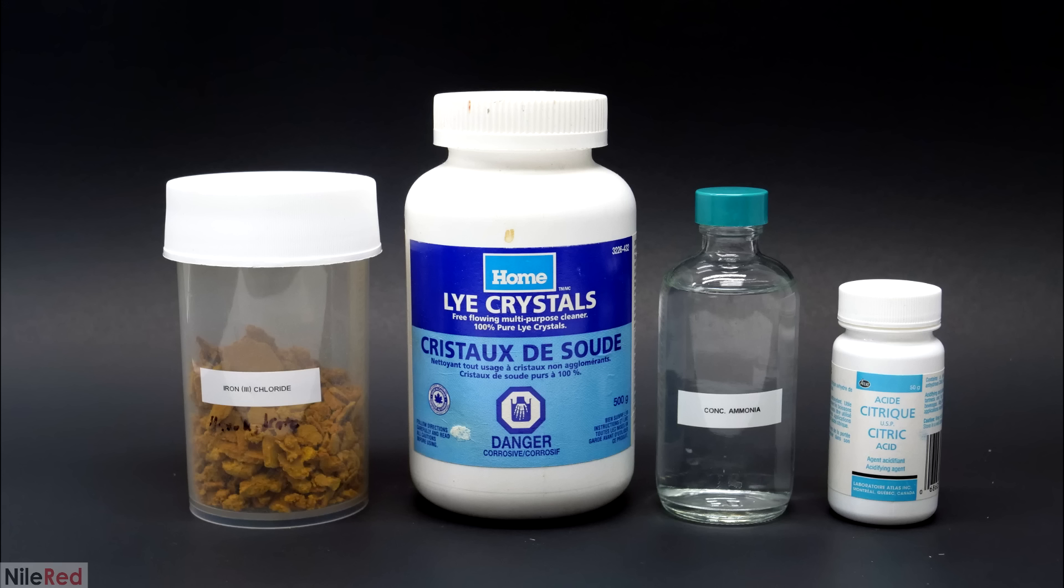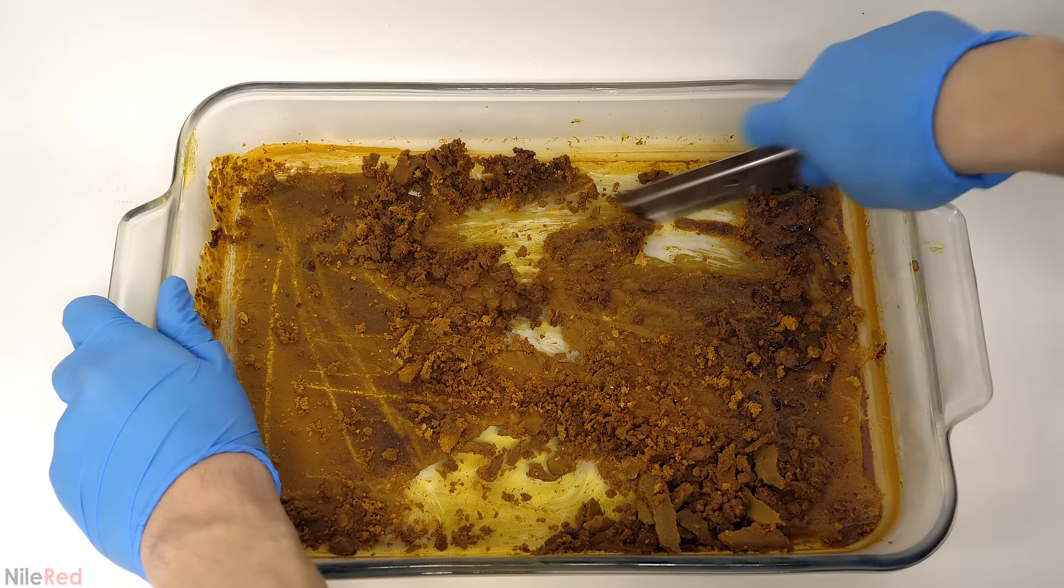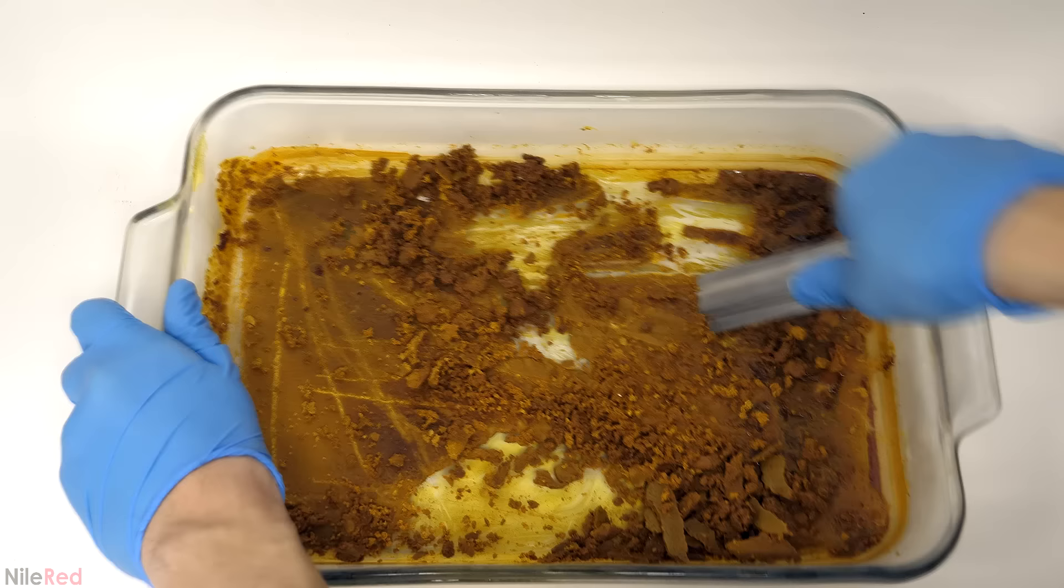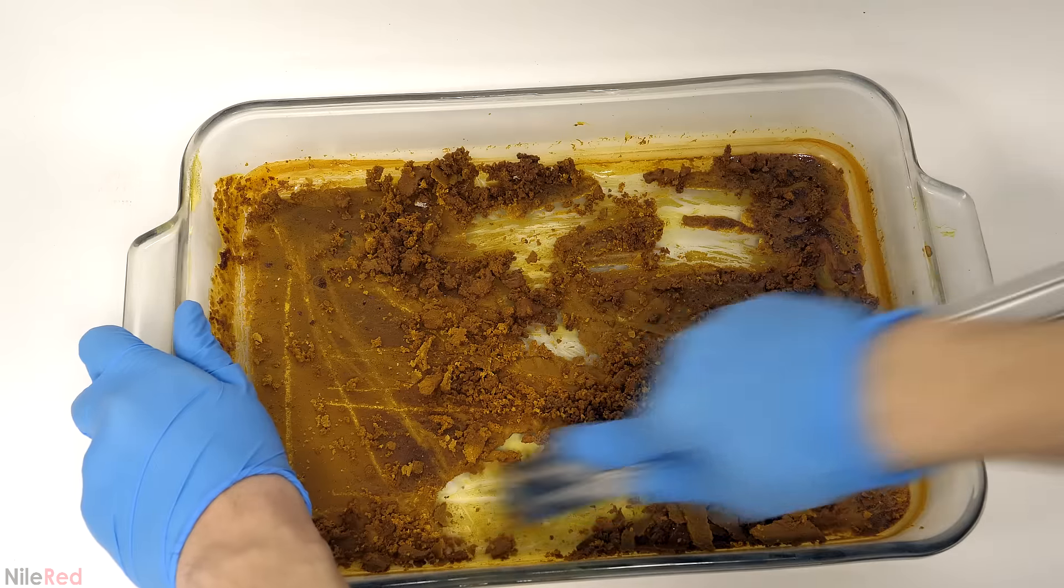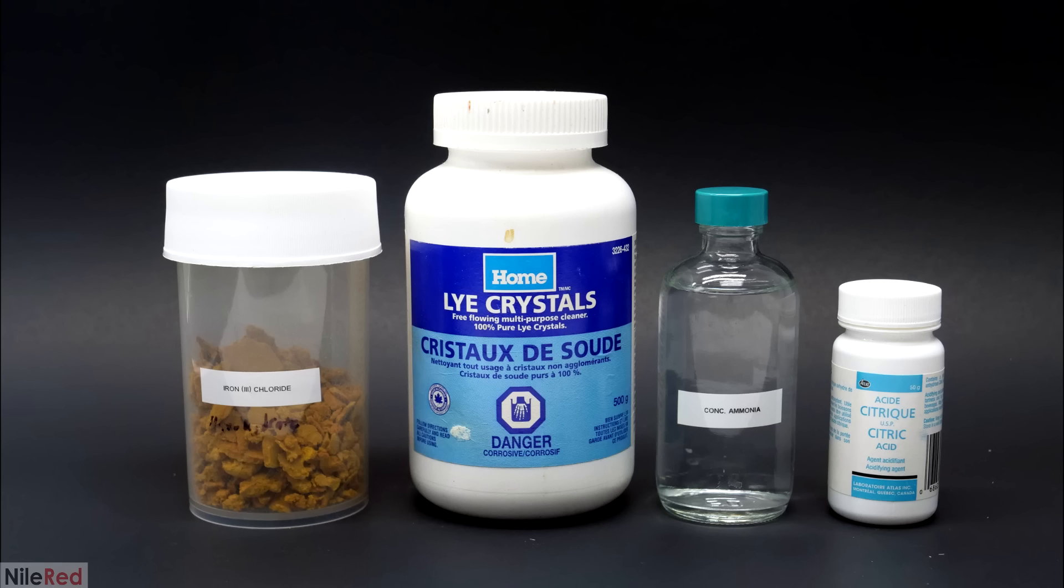In terms of chemicals, I'll be using ferric chloride, sodium hydroxide drain cleaner, ammonia solution, and citric acid. I made the ferric chloride from scratch in my Prussian blue video starting with acid and steel wool. The citric acid and sodium hydroxide drain cleaner were purchased locally, but I got the concentrated ammonia solution online. In hindsight though, I probably could have just used ammonia cleaner from the store.